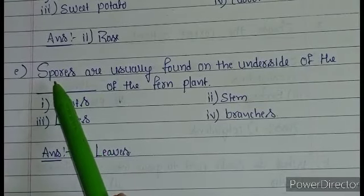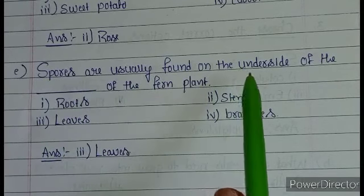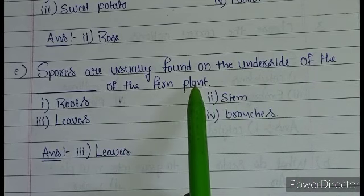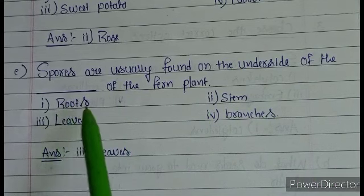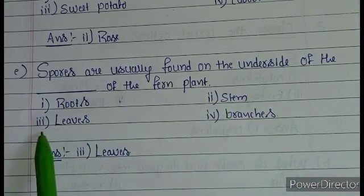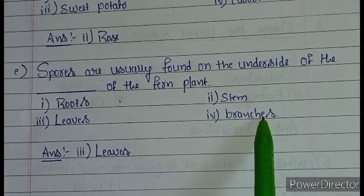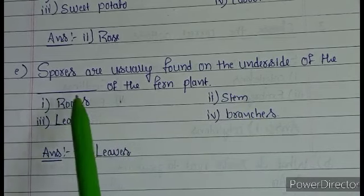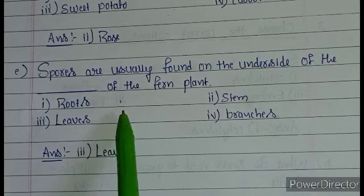Question E: spores are usually found on the underside of the blank of the fern plants. Options: first — roots, second — stem, third — leaves, fourth — branches. The correct answer is leaves. Spores are usually found on the underside of the leaves of the fern plants.